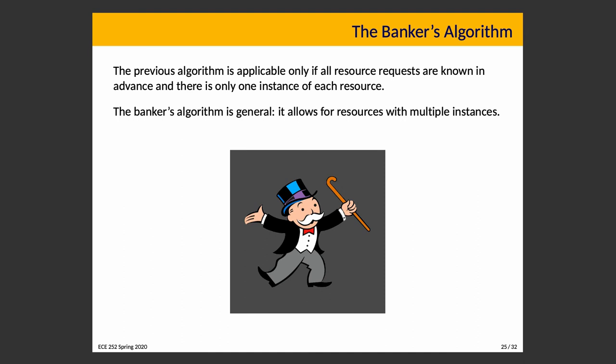The banker's algorithm is intended to be more general, working for resources with multiple instances. The previous safe-state versus unsafe-state analysis is in fact the foundation of the banker's algorithm. Why is it called the banker's algorithm? It's hypothetically an algorithm a small-town banker might follow — the banker tries to prevent allocation of cash on hand in such a way that it's not possible to satisfy all customers. Banks lend out more money than they have on hand on the usually correct theory that not everyone will come asking for all their deposits at once.